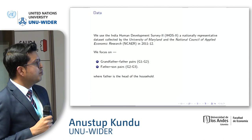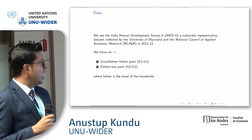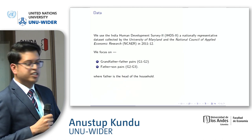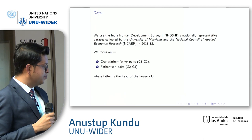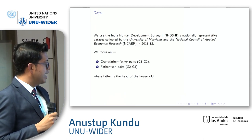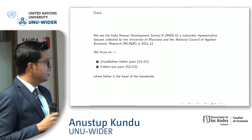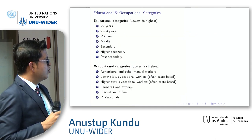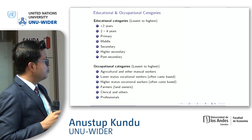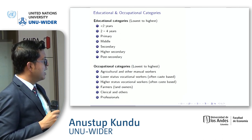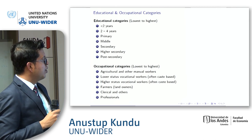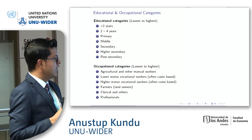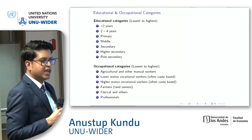We use the India Human Development Survey round two, focusing on grandfather-father pairs and father-son pairs, which we call G1-G2 and G2-G3. Father implies the head of the household — that's how we make the distinction. Educational categories are standard, categorized into seven groups from lowest to highest. Occupational categories are similar: agriculture and other manual labor are the lowest group, and professional occupations are the highest.